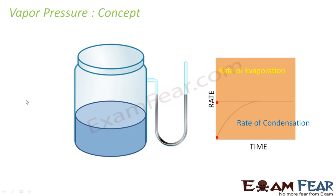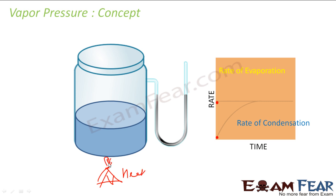Now let us understand the concept of vapor pressure. Suppose we have one closed jar with some water, and we put some fire here to heat it up. When you start heating this closed jar, molecules will come up from the water and occupy the empty space above. The rate of evaporation is constant because you are heating at a constant rate.